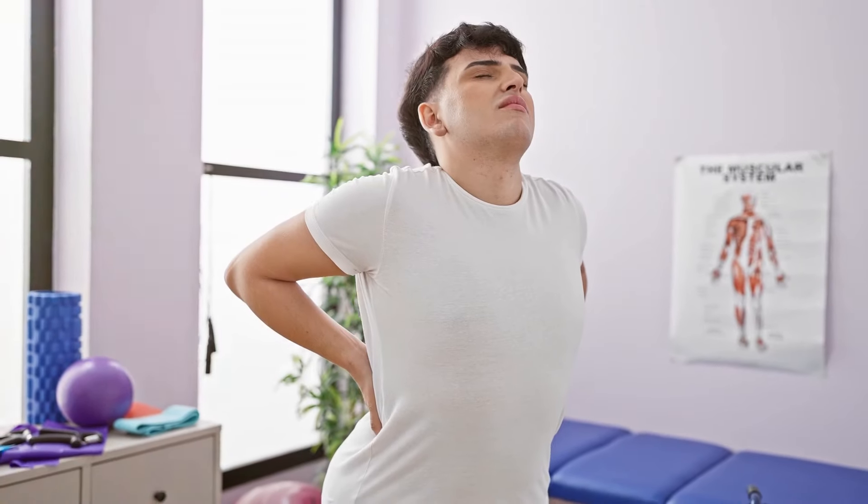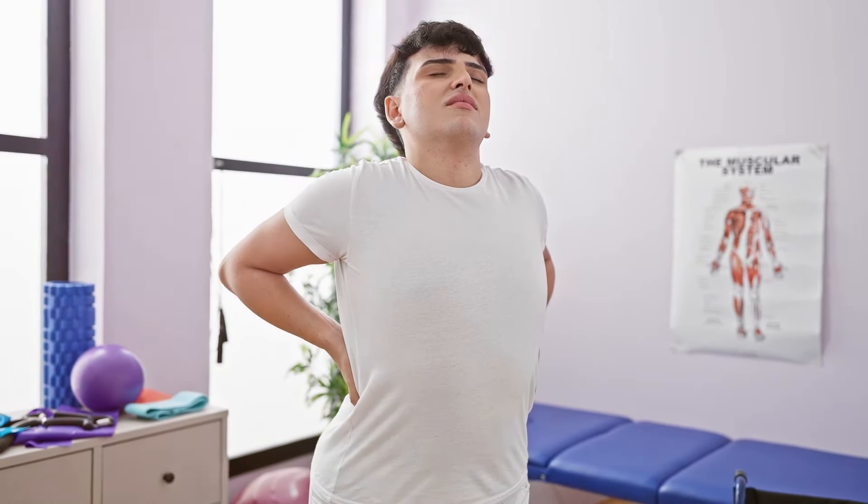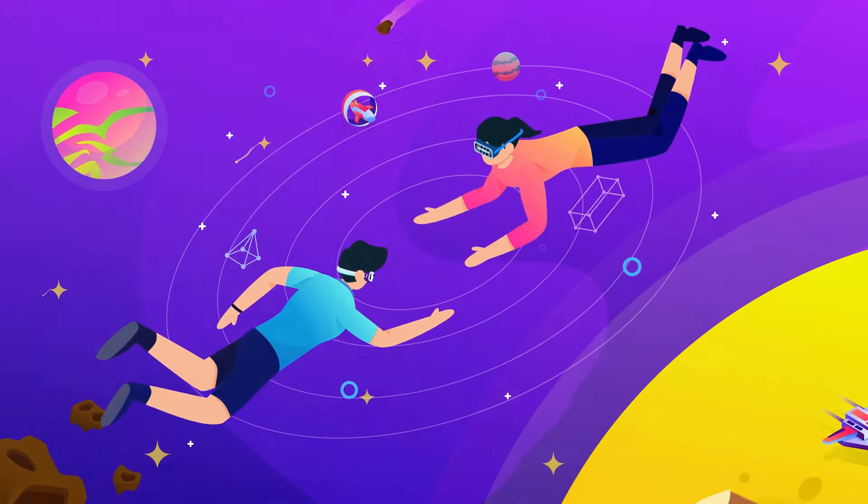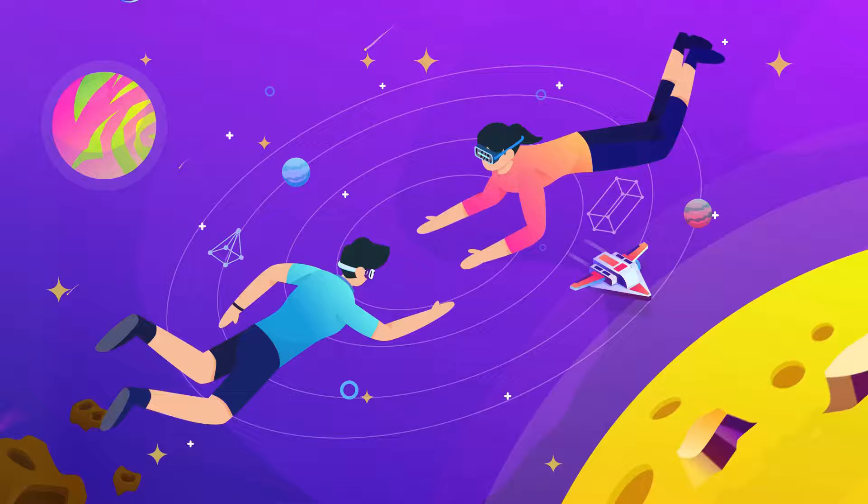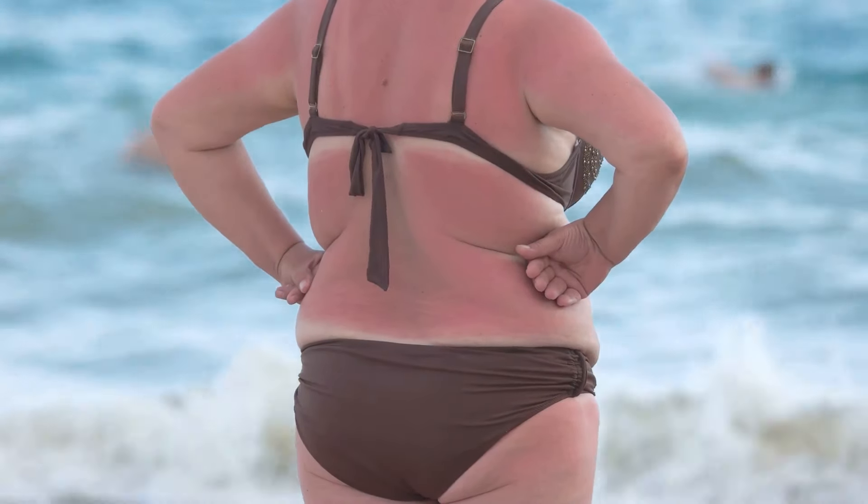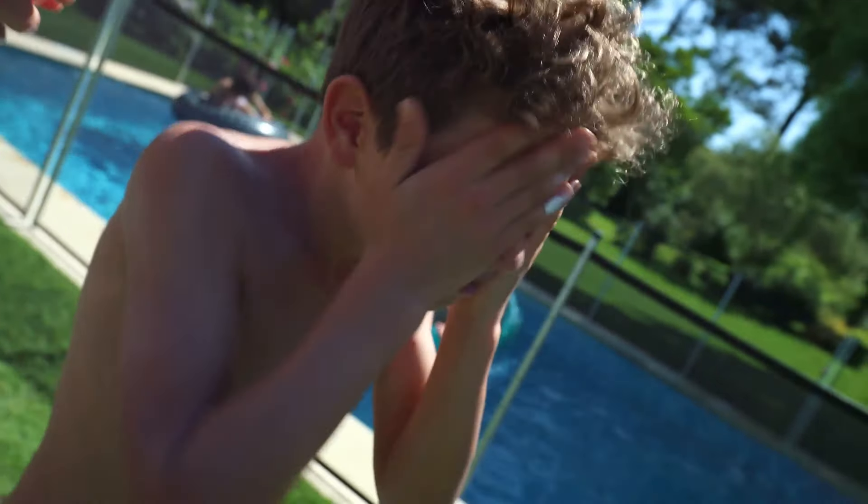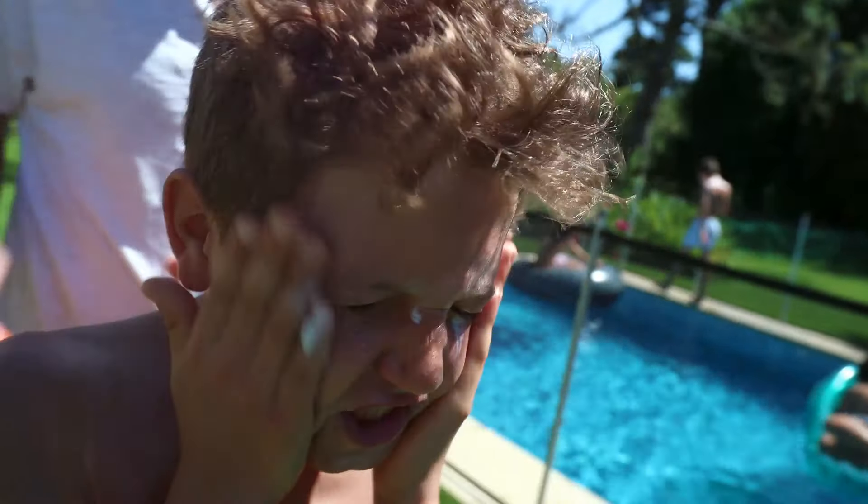For instance, humans suffer from back pain, a sign that our bodies might be better suited to a planet with less gravity. This raises questions about whether our ancestors evolved under different gravitational conditions. And our skin is surprisingly vulnerable to the sun's UV rays compared to other species. This vulnerability suggests that we might not be perfectly adapted to our current environment.